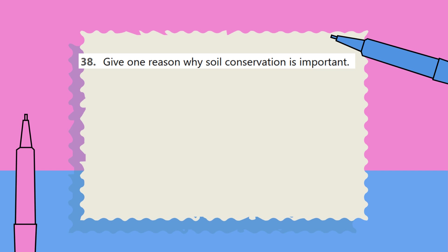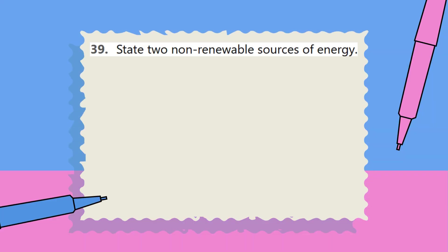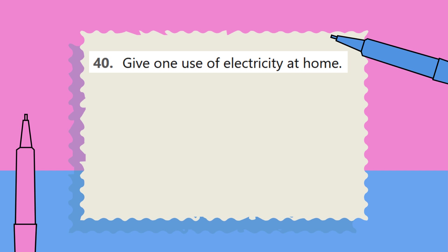Question 39: State two non-renewable sources of energy. Question 40: Give one use of electricity at home.